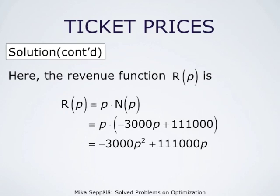Therefore, the revenue function R(P) is P times N(P), which is P times (−3,000P + 111,000). By expanding the brackets, we get that the revenue function is R(P) = −3,000P² + 111,000P.